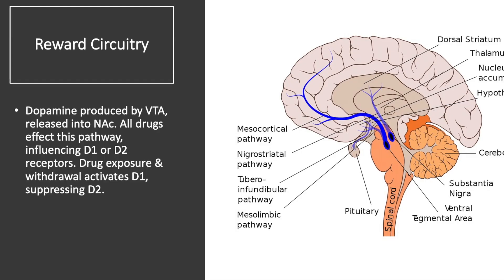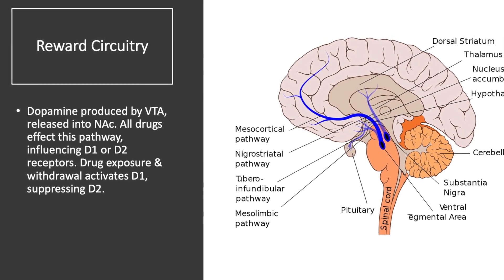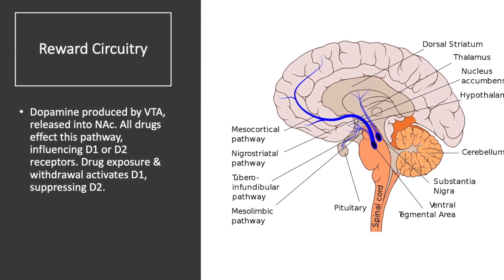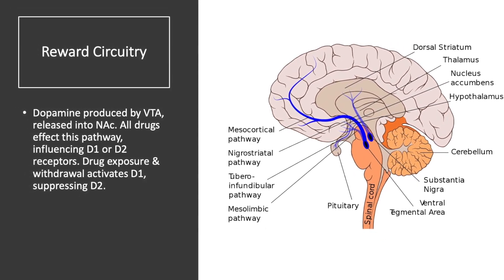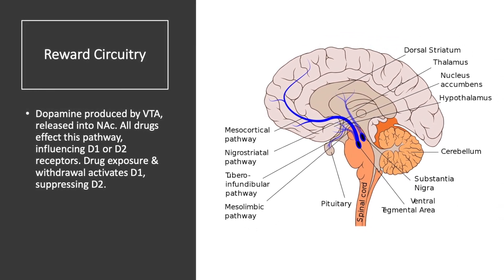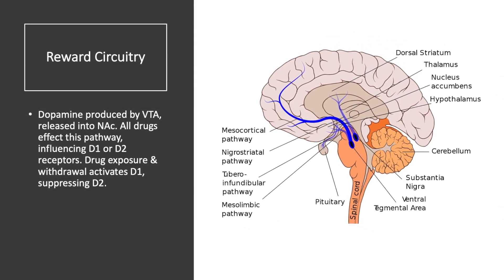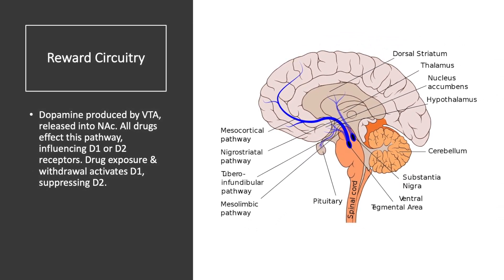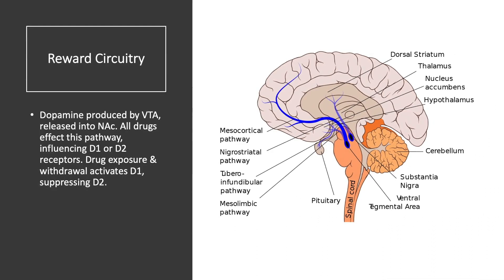Reward circuitry: dopamine is produced by the ventral tegmental area and it is released into the nucleus accumbens. All drugs affect this pathway and they influence dopamine D1 or D2 receptors. Drug exposure and withdrawal also activates D1, but this suppresses the D2.